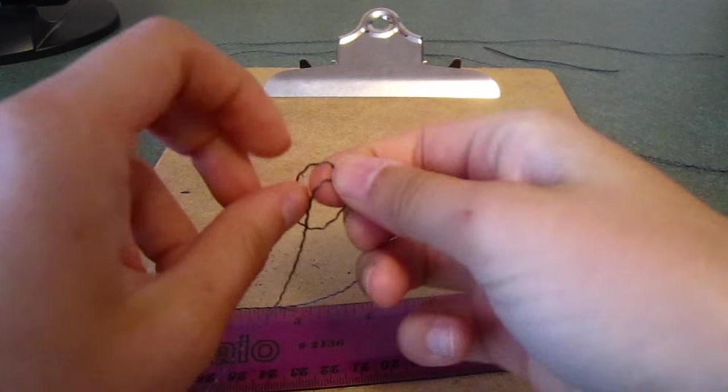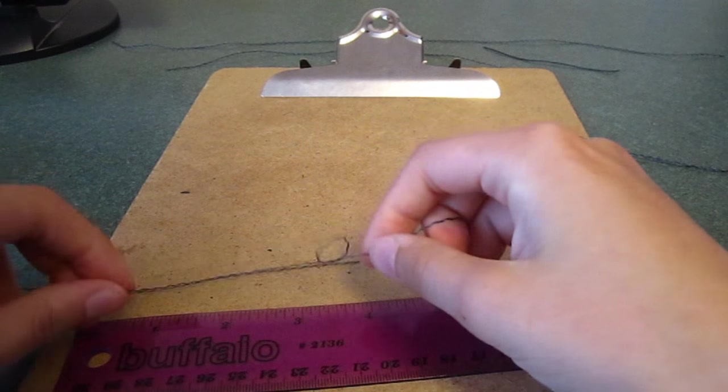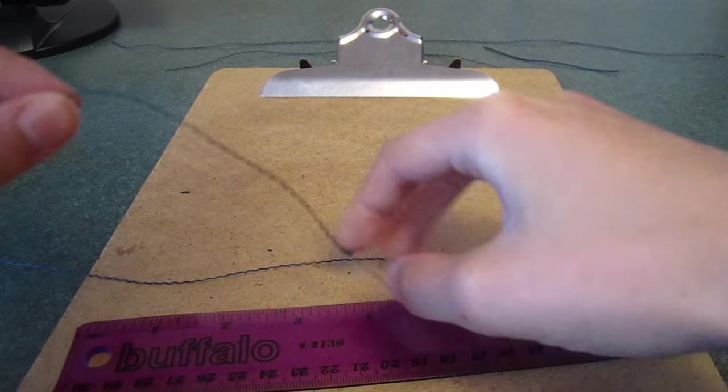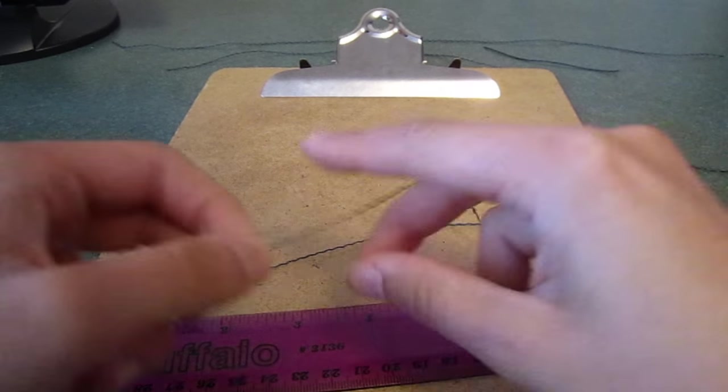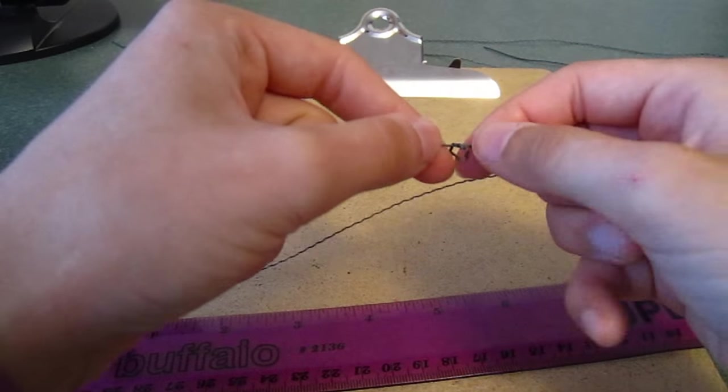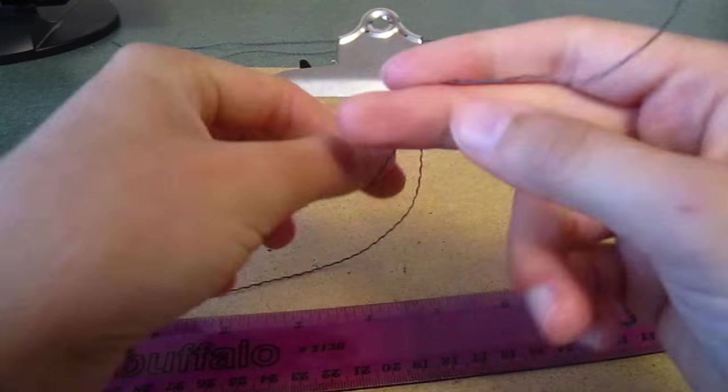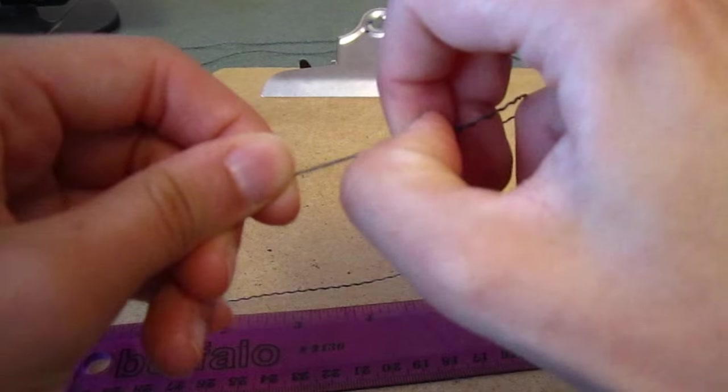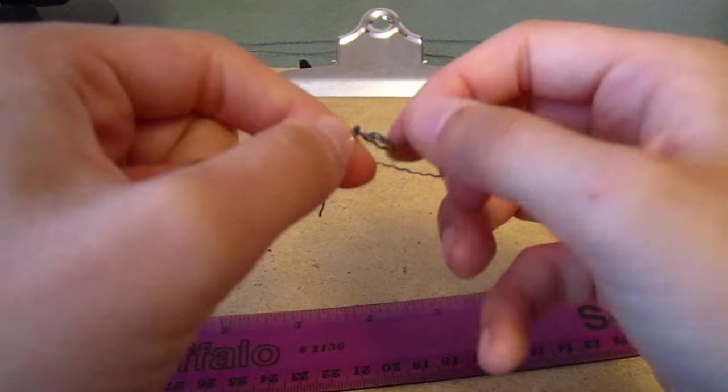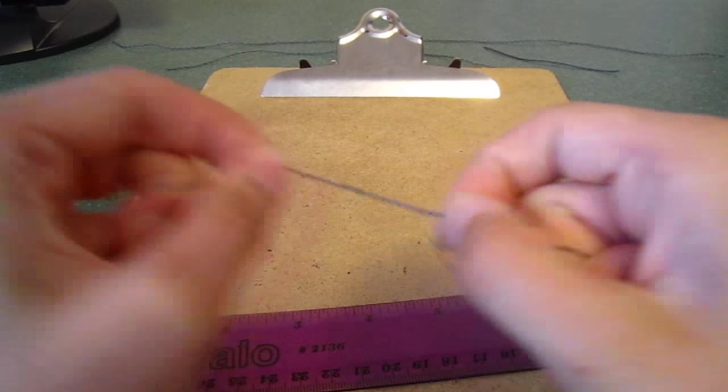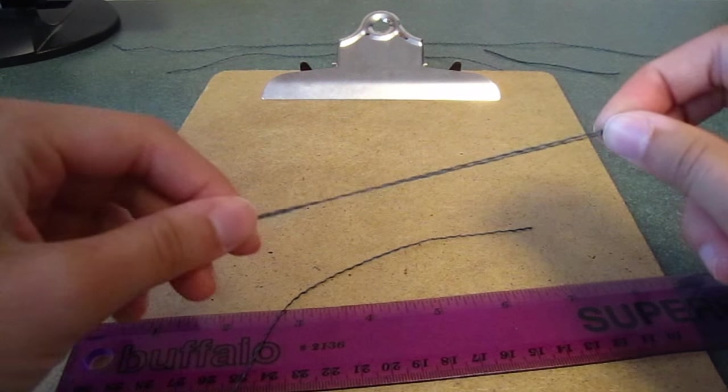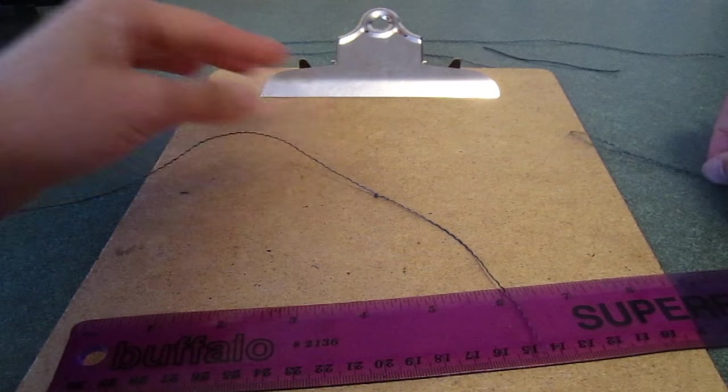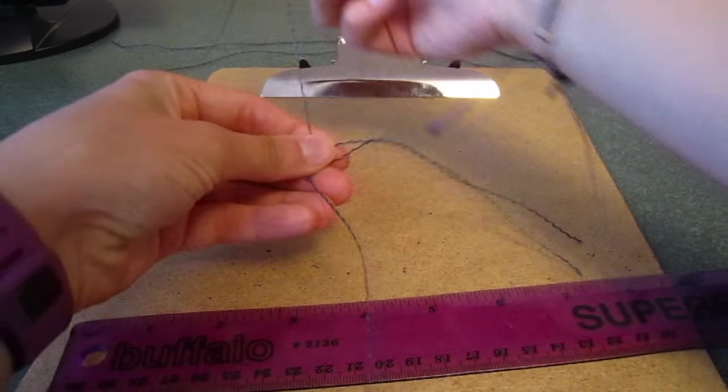Taking one of the 18 inch strands and one of the 12 inch strands, I first tied a few knots about 5 inches from the end of the 18 inch strand. I then folded the 12 inch strand in half and tied it just above the knots I tied onto the 18 inch strand.